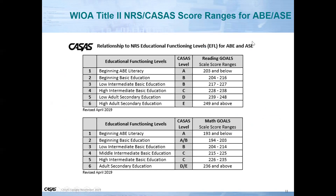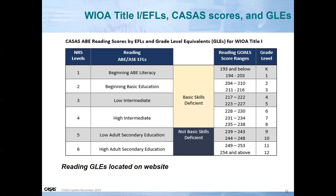With the CASAS score ranges for ABE and ASE, these charts are located on our website if you have questions about educational functional levels, their correlation to CASAS levels, and the Reading Goals scale scores. For CASAS scores and grade level equivalencies, we also have charts on the website. When we send this PowerPoint to you, we'll include those hyperlinks.